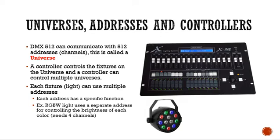A controller controls a fixture on a universe. A universe can communicate with 512 addresses, and a controller can control multiple universes if you want. Each fixture, which is a light, can use multiple addresses, and each address has a special function. We have an example of an RGBW light fixture that uses a separate address for controlling the brightness of each color, and it needs four channels.